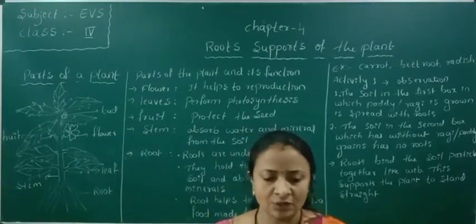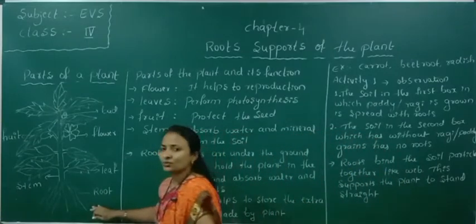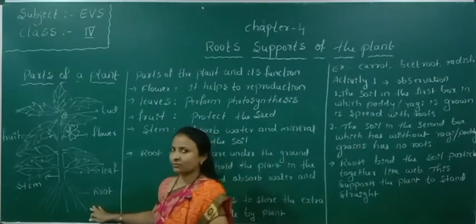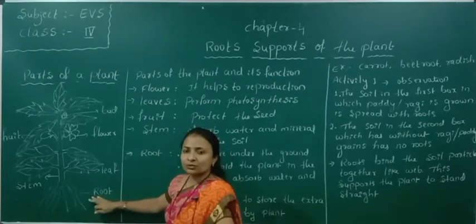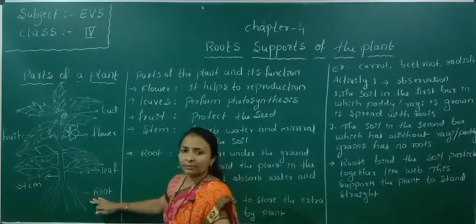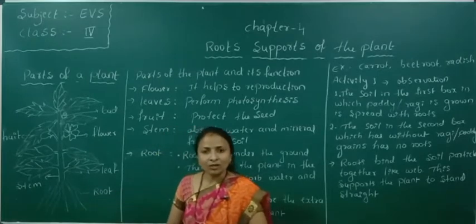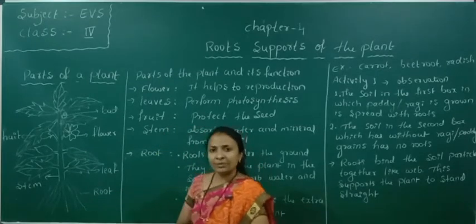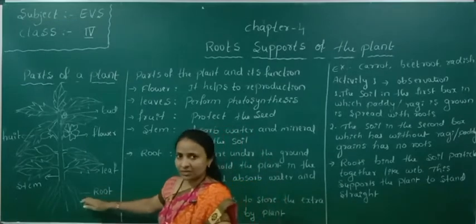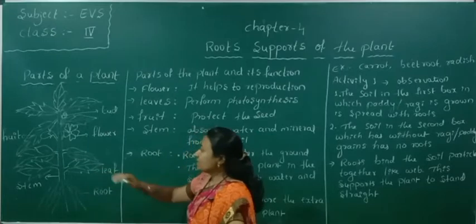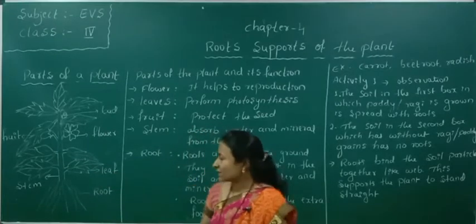These roots are generally brown in color. Roots are the main part of the plant. They help to absorb water and minerals from the soil. These leaves are generally green in color.